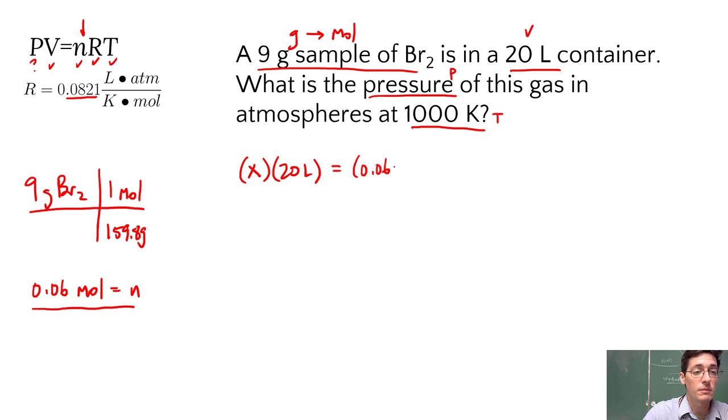So 0.06 moles times the ideal gas constant. The universal gas constant is 0.0821, and our unit is L·atm over K·mol. And multiply that by our temperature, 1000 K.